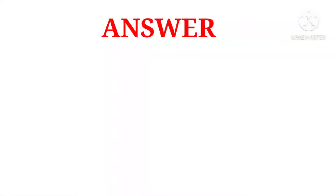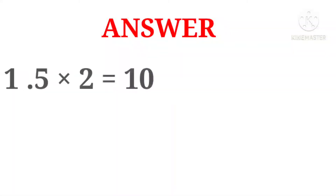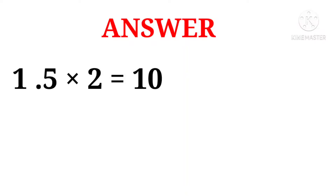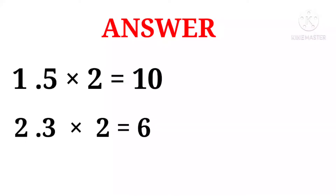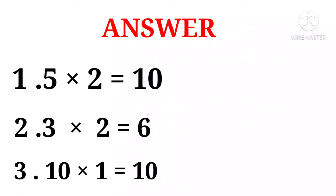Shall we check the answers for the mental sums? First one: five multiplied by two equal to ten. Second one: three multiplied by two equal to six. Third one: ten multiplied by one equal to ten. Very good children.